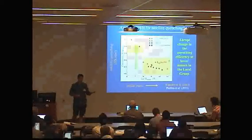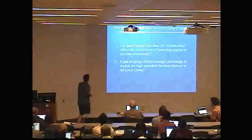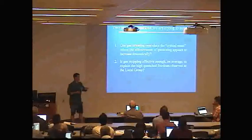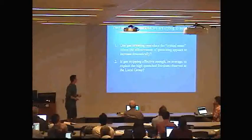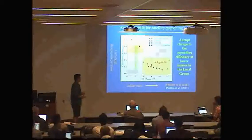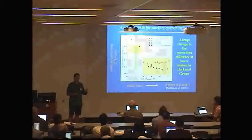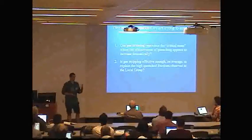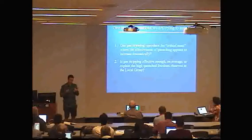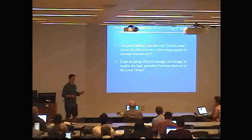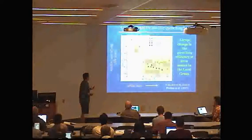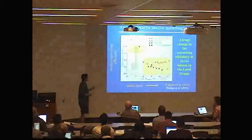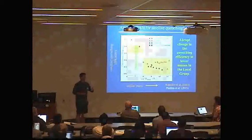My work was generally to try to understand this, and we were trying to answer two primary questions. First, can gas stripping reproduce what we're calling this critical mass in satellite quenching? Looking right around 10 to the 8 to 10 to the 9 in stellar mass, you see this uptick where quenching efficiency changes dramatically, indicating a change in the dominant mechanism acting on these satellites. Second, is gas stripping effective enough on average? We need to remove virtually all of the H1 from these things and shut down star formation really, really quickly.